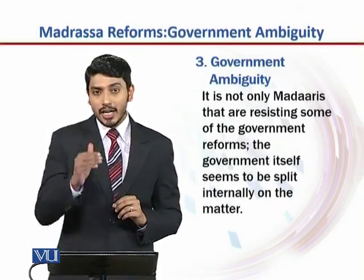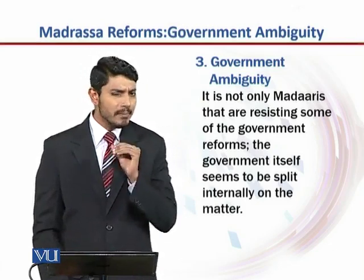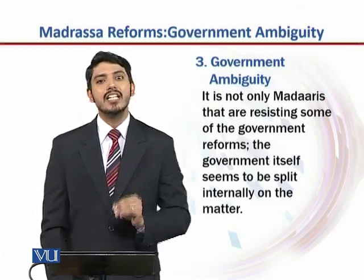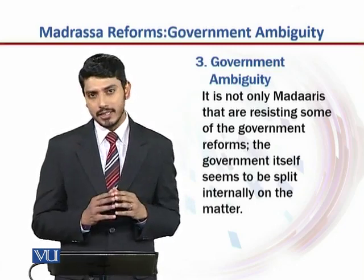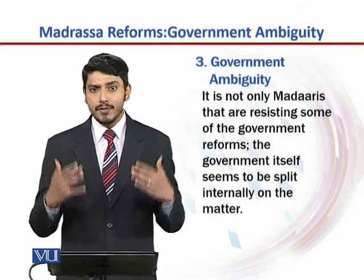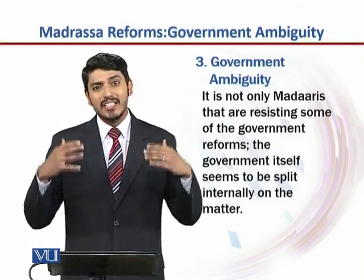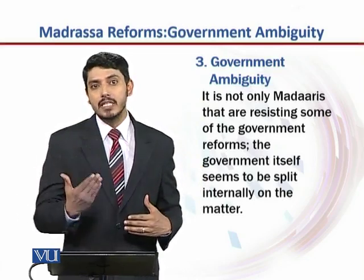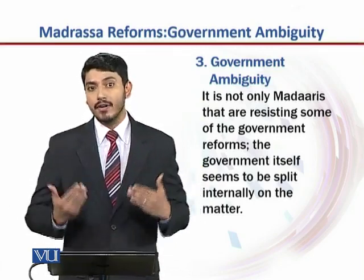The third issue or obstacle within madrasa reforms is government ambiguity. It is not only madrasas that are resisting some of the government reforms — the government itself seems to be split internally on this matter. Before understanding what government ambiguity is, we need to understand what constitutes the government. The government has a lot of different stakeholders and politicians representing the different geographical realities of Pakistan — it is essentially an amalgamation of people's representation from four different provinces, each with their own expectations and geographical realities.